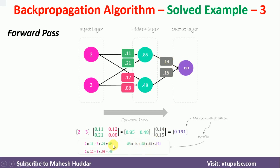This can also be done using matrix multiplication. The input is [2, 3] multiplied by W1, W2, W3, W4. Once you multiply it, you get the output at H1 and H2. If you then multiply this with W5 and W6, you get the output at the output layer. So we got the predicted output at the output layer, which is 0.191.